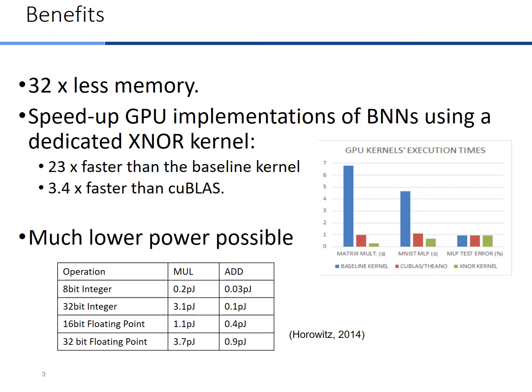This results in binarized neural networks that require 32 times less memory storage and access. To evaluate the speedup, we programmed a CUDA kernel which performed 23 times faster than the baseline kernel and 3.4 times faster than the cuBLAS kernel. Viewing the Horovitz power demands table, we can see that by using only 8-bit additions we can reduce power consumption by two orders of magnitude. Therefore, with one bit we can reduce it even further.